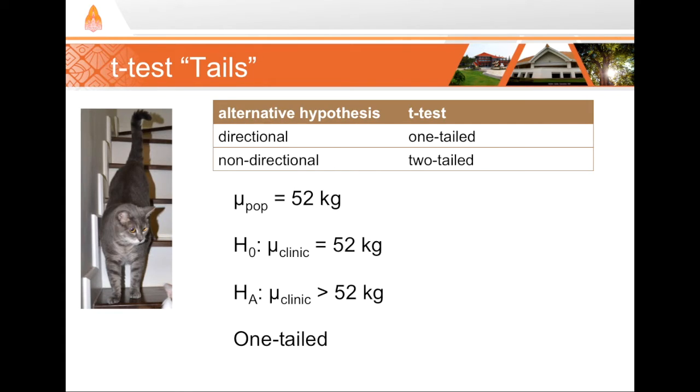On the other hand, if my question had been, is the weight of people at the clinic different, that is either heavier or lighter, then in that case, my alternative hypothesis is non-directional, and I would use a two-tailed, one-sample t-test.